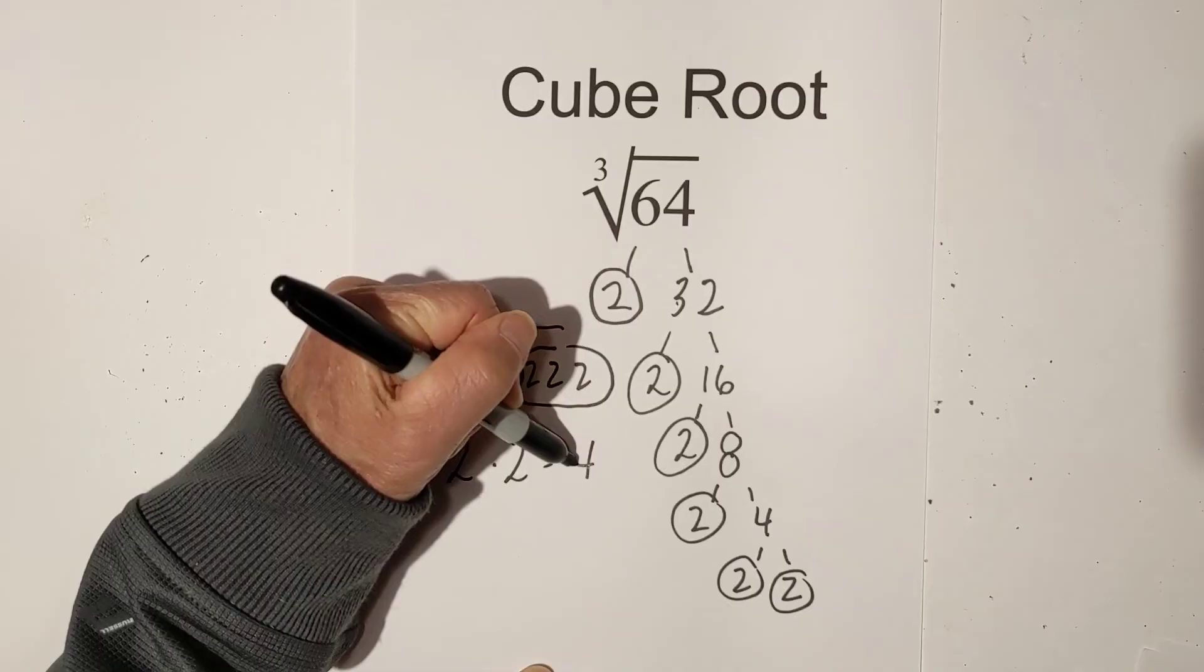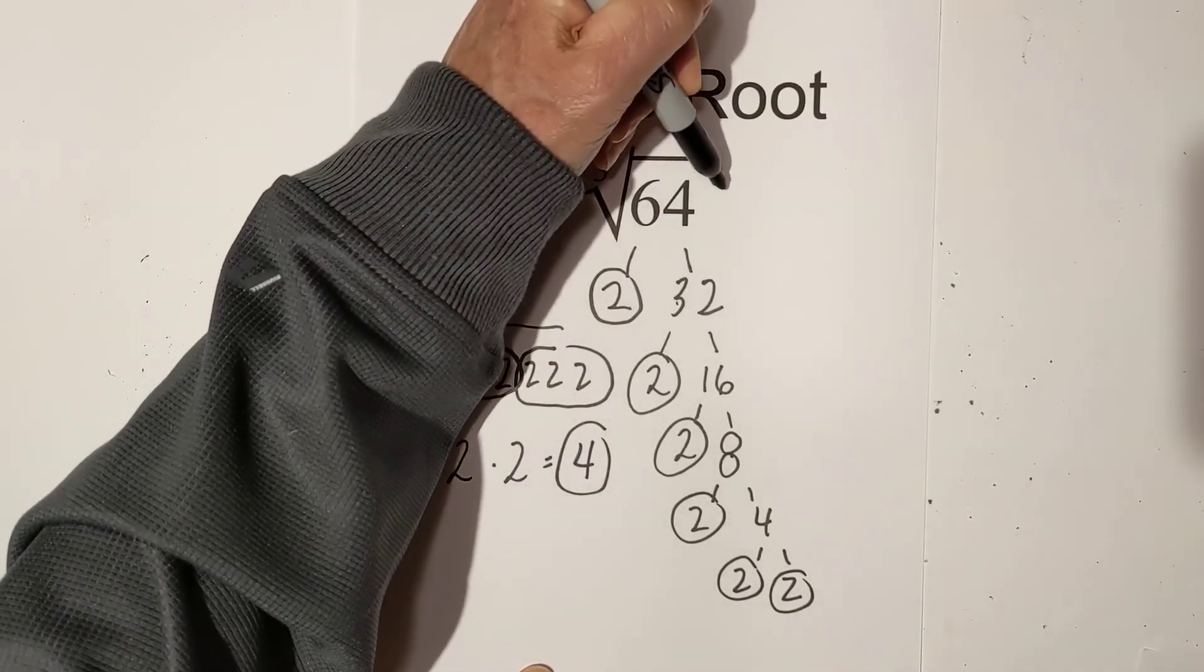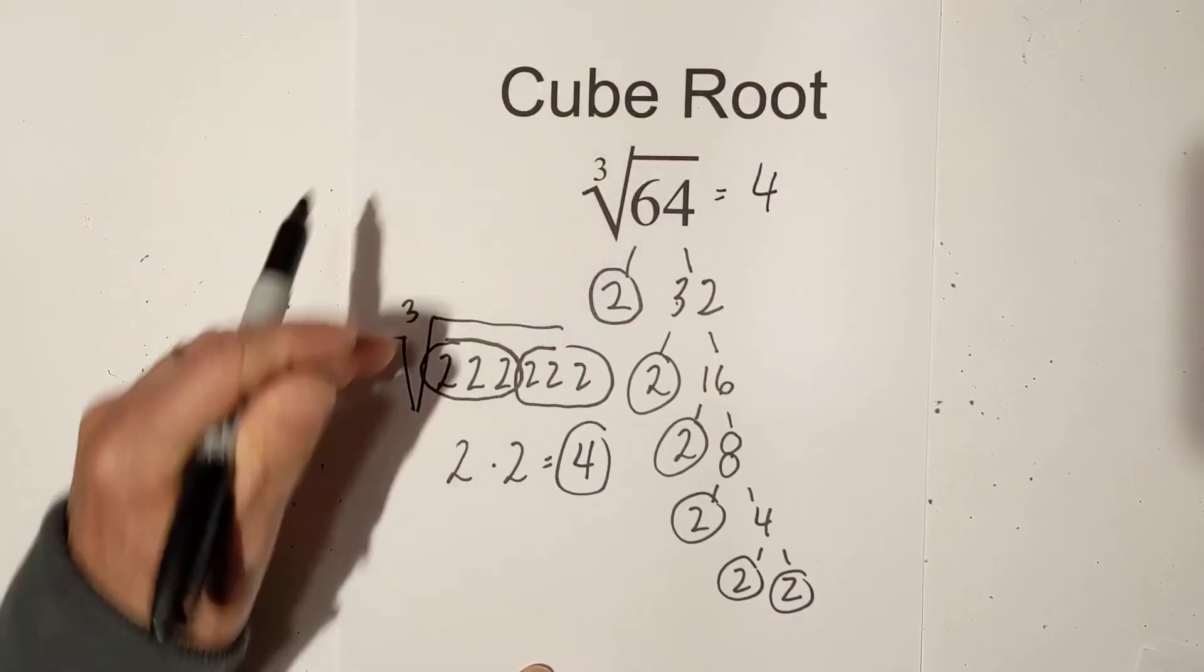And then all I do is multiply these together. So the cube root of 64 is 4.